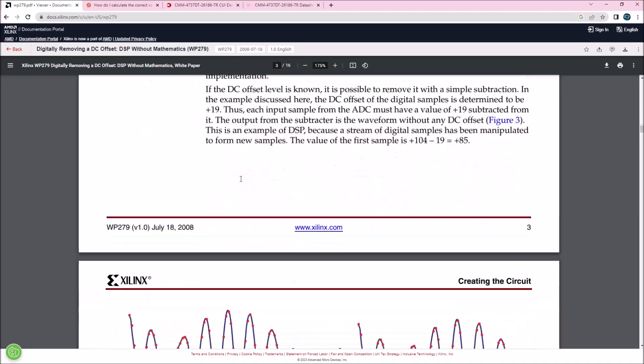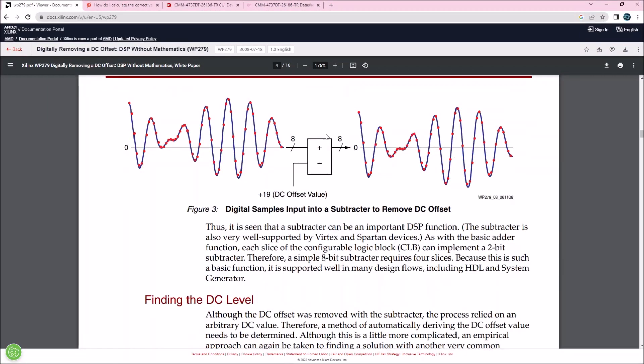If we know the offset, we can subtract it from the samples because those are just a string of numbers, positive and negative numbers. If we know the offset, in this case it's 19, we can just subtract it with a simple subtractor, a signed subtractor. Why I say signed? The offset can be negative as well, and the samples are positive and negative, and this has to be a signed subtractor.